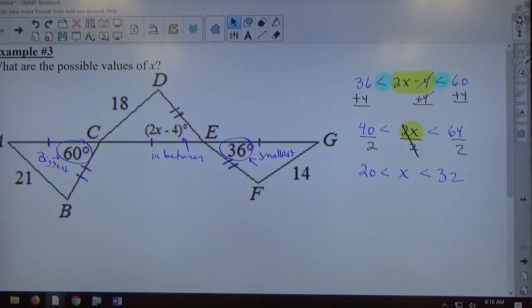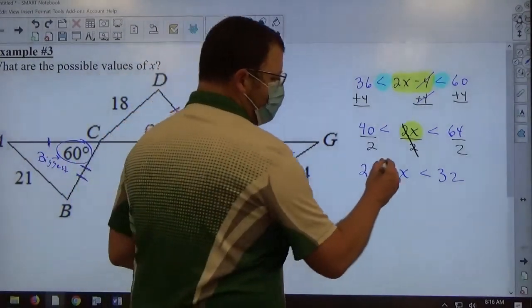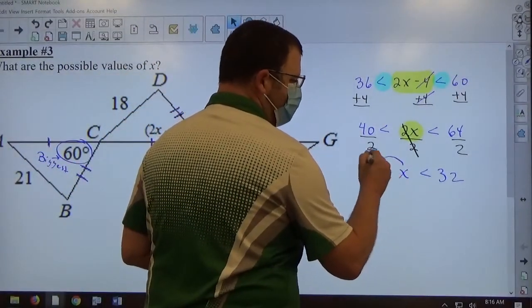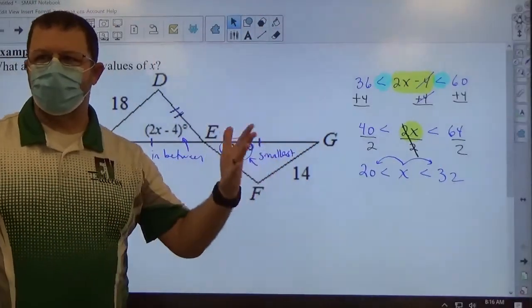It says, what are the possible values of x? x has to be between 20 and 32. That's what this means. If I read the inequality from x to the number, this says x is greater than 20. This says x is less than 32.